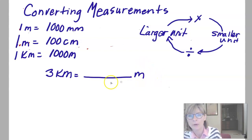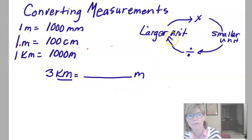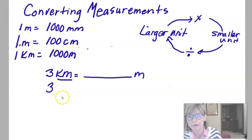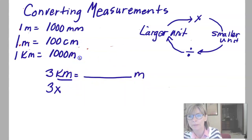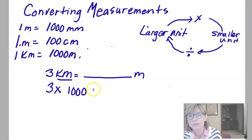Let's say we have 3 kilometers — kilometers is the distance used to measure long distances — and we want to change it to meters. We have to decide: are we going from a larger unit to a smaller, or a smaller unit to a larger? I want to change it into a smaller unit, so I'm going from a larger unit to a smaller unit, and so I'm going to multiply. I have 3, and how many meters are in a kilometer? Looking at our chart, there are 1,000 meters in a kilometer. So 3 times 1,000 equals 3,000 — 3 kilometers is equal to 3,000 meters.